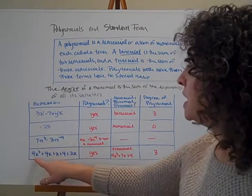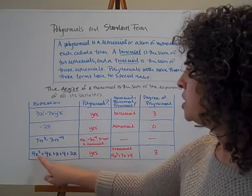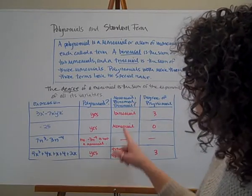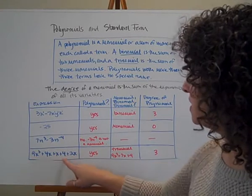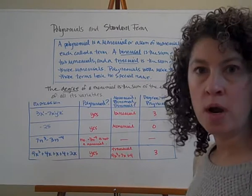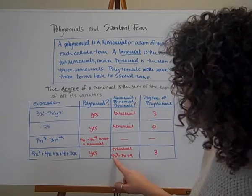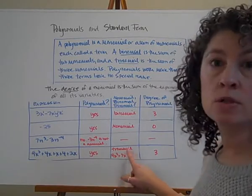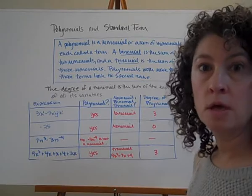Our last expression: 9x cubed plus 4x plus x plus 4 plus 2x. Each of these terms is a monomial, so yes, it is a polynomial. Before classifying it, we should simplify: this simplifies to 9x cubed plus 7x plus 4. It has three terms, so it's a trinomial. Looking at the degree of each monomial — 9x cubed has degree 3, 7x has degree 1, and 4 has degree 0 — the largest degree is 3, so the degree of this polynomial is 3.